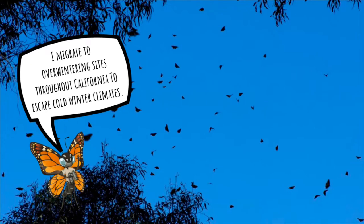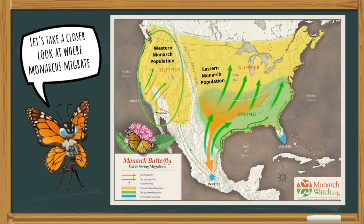Western monarchs migrate to overwintering sites throughout California to escape cold winter climates. Monarchs can migrate from hundreds to thousands of miles to find the perfect locations to spend the winter. The Rocky Mountains divide the eastern and western monarch populations — monarchs east of the Rockies migrate to Mexico, and monarchs west of the Rockies migrate to California for the winter.